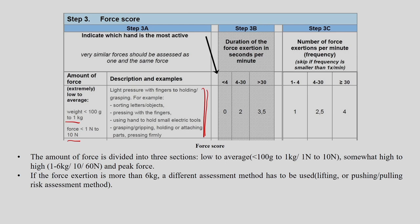Step 3B is the duration of force exertion in seconds per minute. If it is less than 4, the score is 0. If it is 4 to 30, then 2. If it is more than 30, then 3.5. Step 3C is the number of force exertions per minute — that is the frequency. Here also you have pre-computed values, so you have to see where you stand.